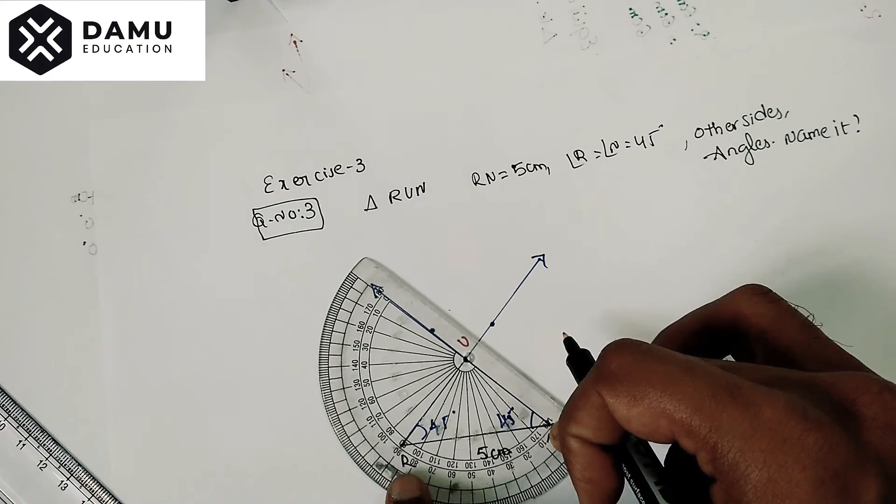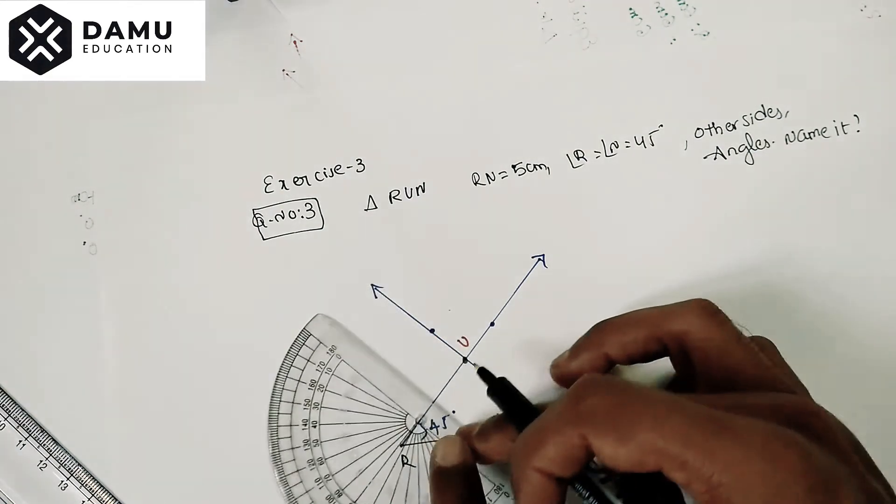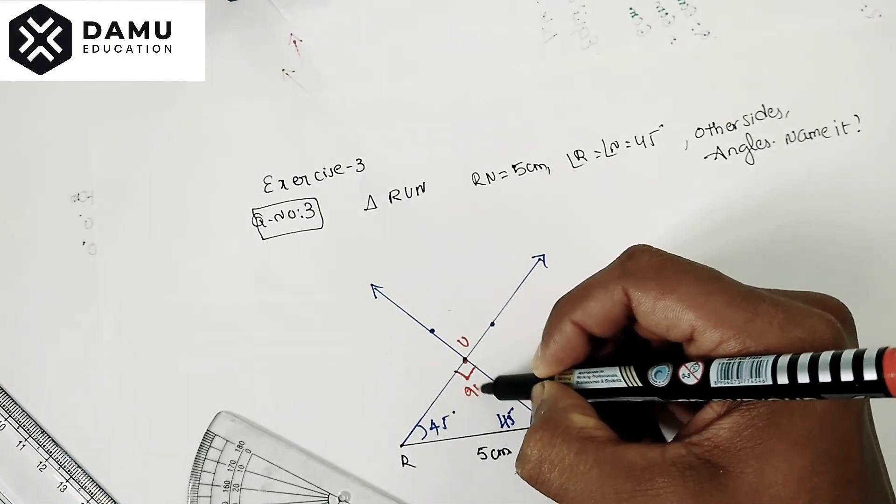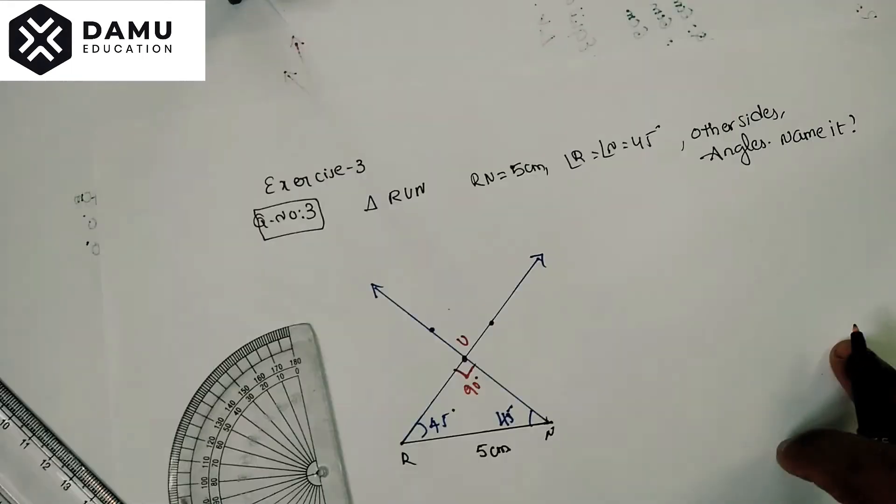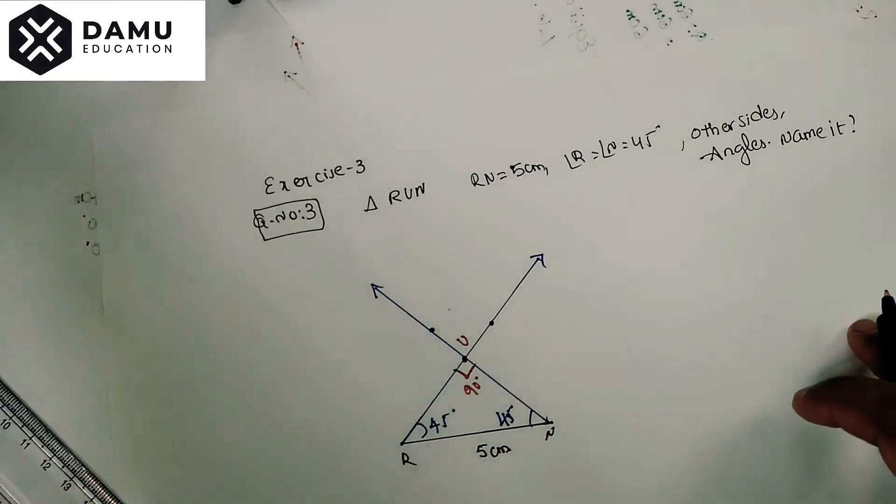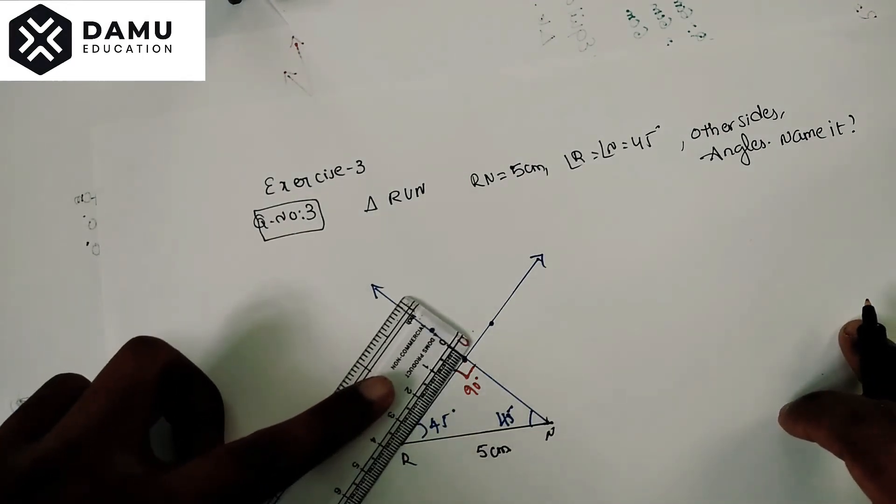So here it's getting 90. What is this angle? It is 90 degrees. So what are the other two sides' lengths? They asked what is the length of the other two sides. Here I am placing zero at this point.